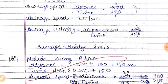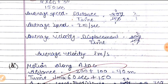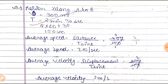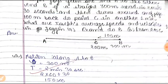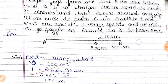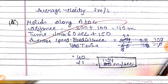Now for the second part — A to C. We went from A to B (300 meters) and then B to C (100 meters back), so the total distance from A to C is 300 + 100 = 400 meters.